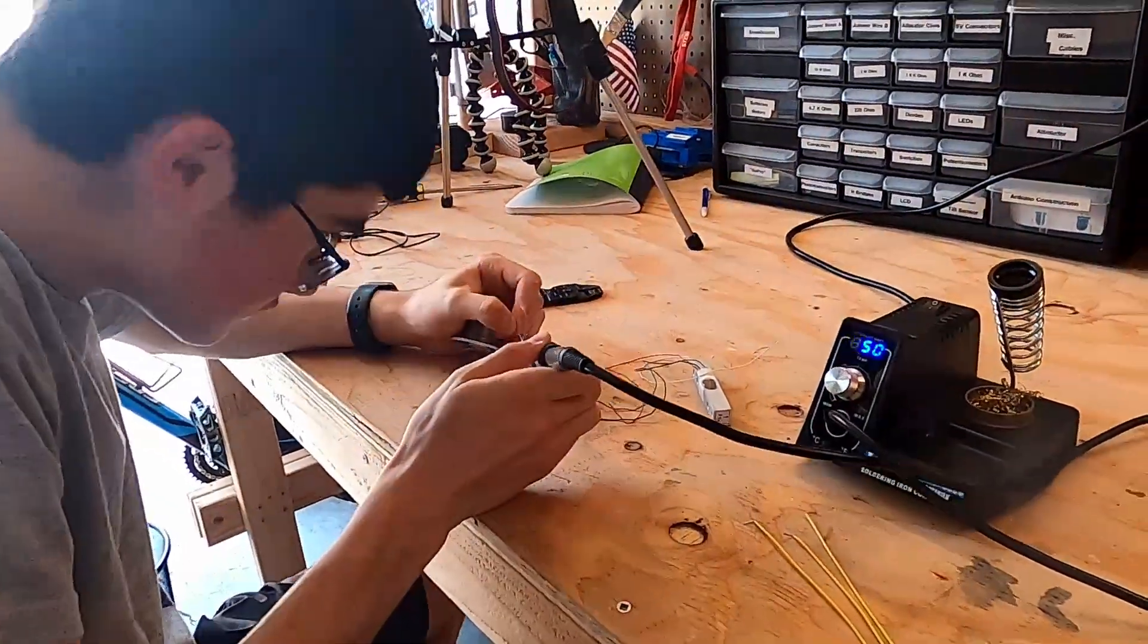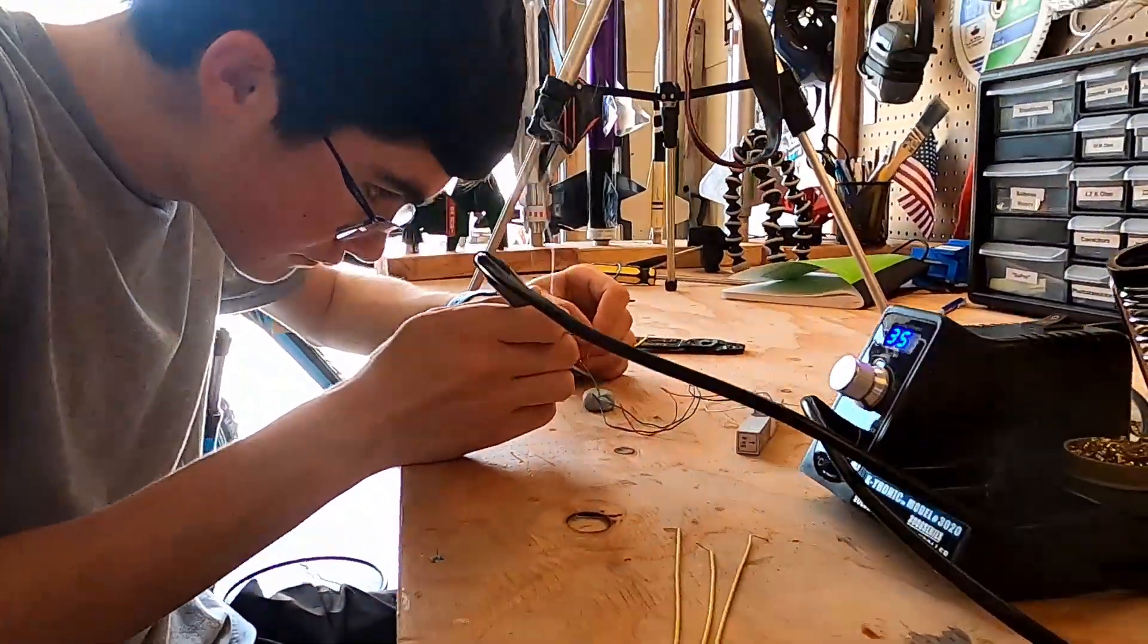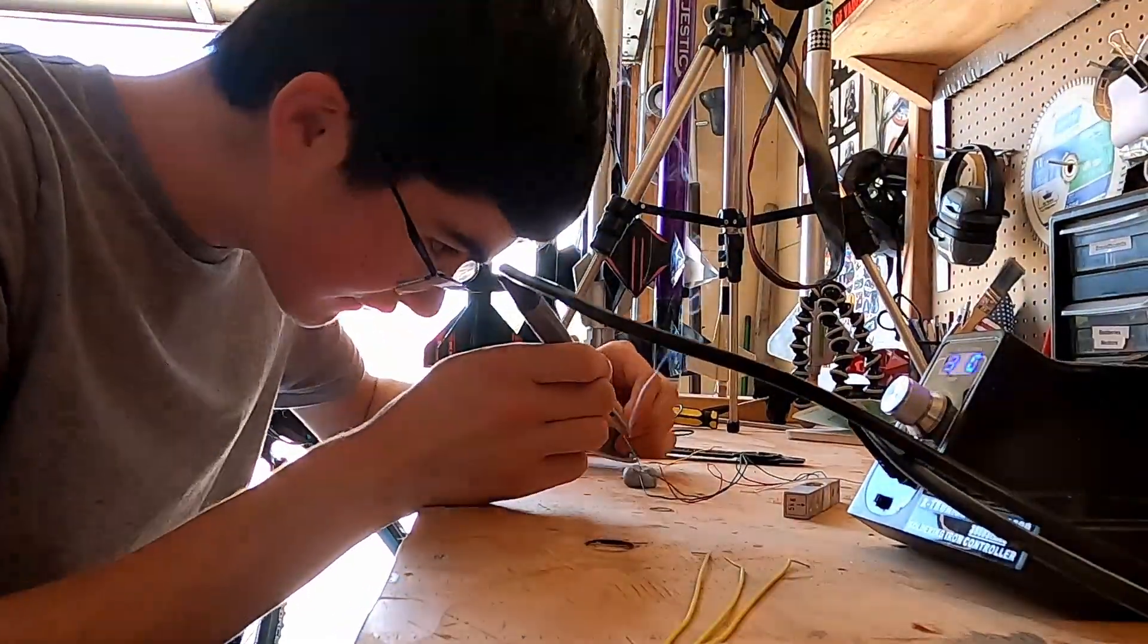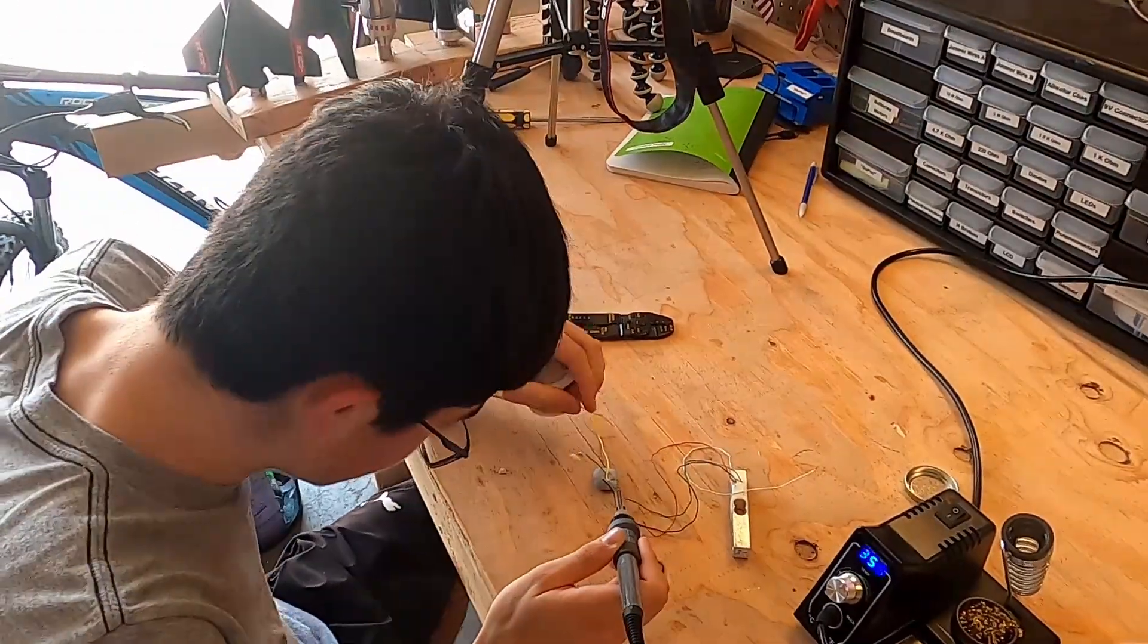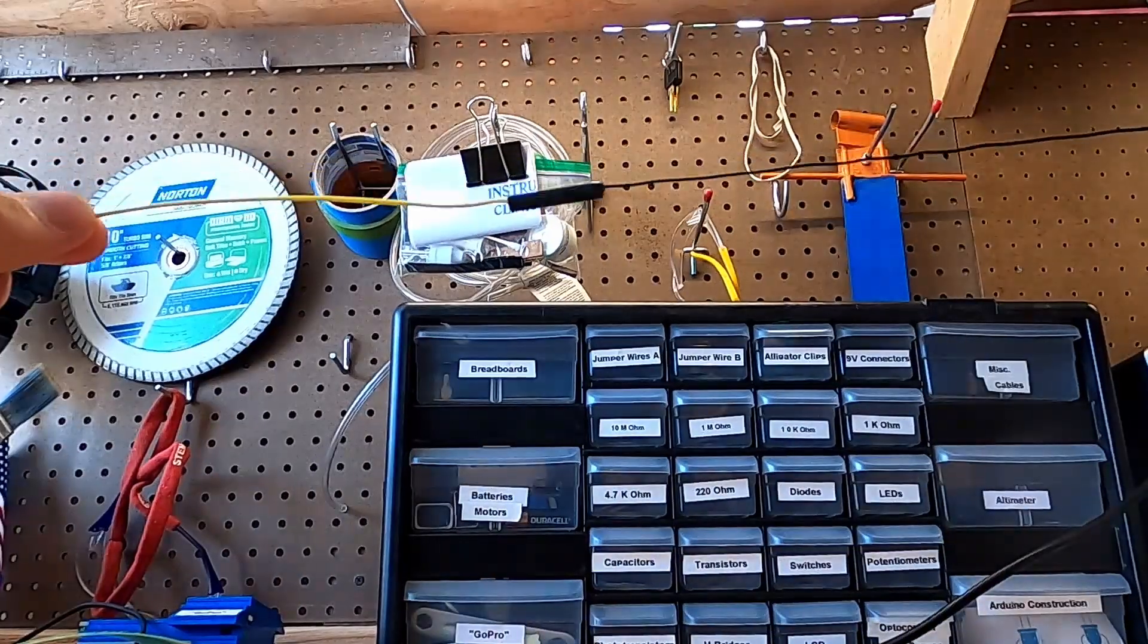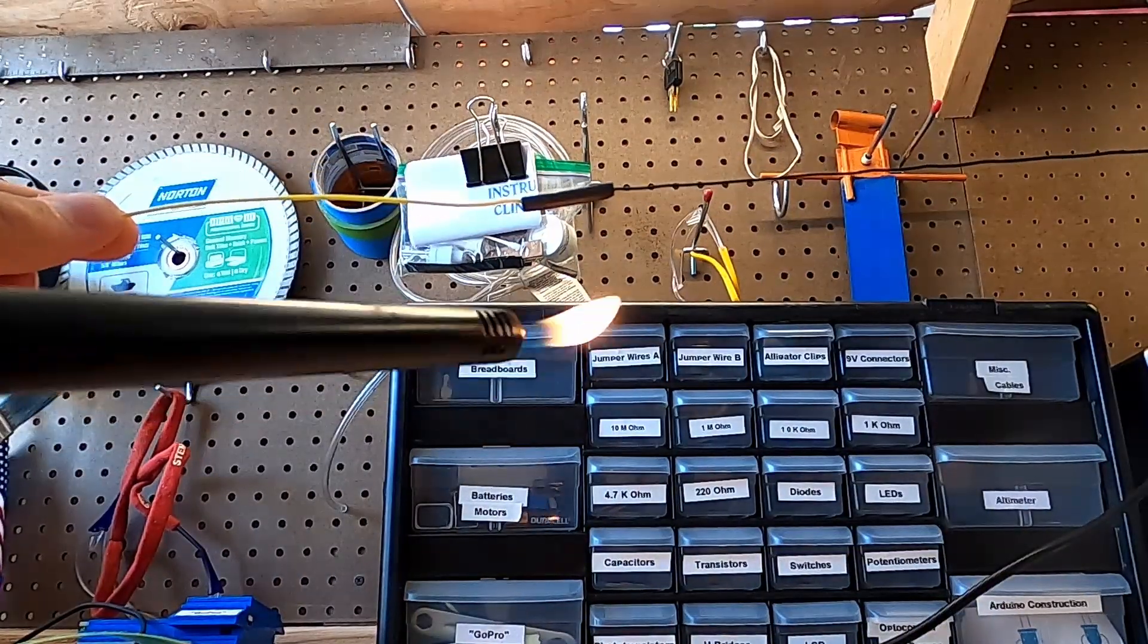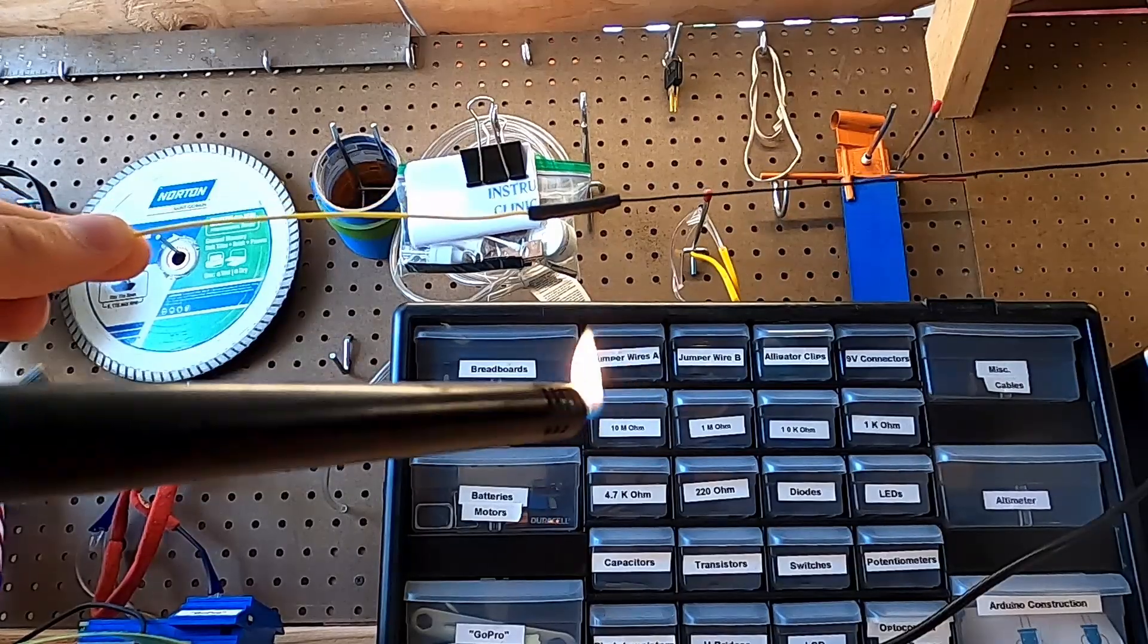Now you are going to solder the load cell wires to the Arduino breadboard jumper wires. You may need to strip the load cell wires to easily solder the wires together. And now you're just going to heat shrink that to keep them better protected.